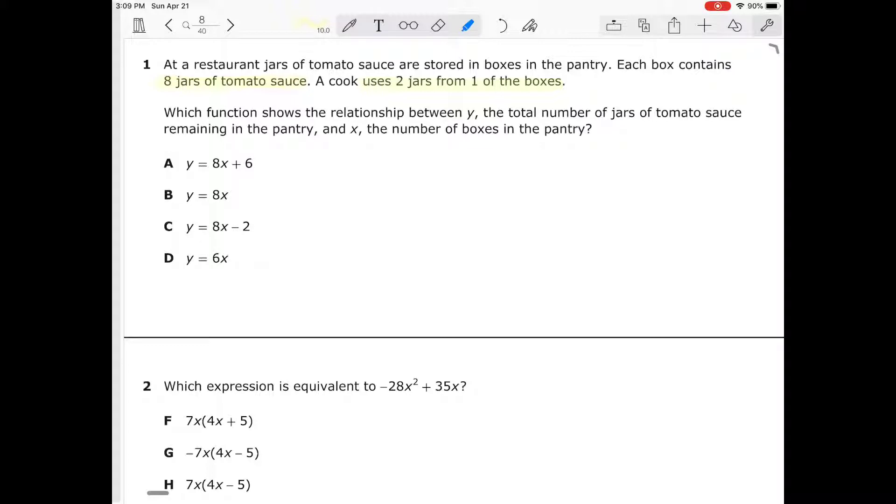Which function shows the relationship between y, the total number of jars of tomato sauce remaining in the pantry, and x, the number of boxes in the pantry? We have 8x and minus two because he used two jars. The only equation that fits that question is answer choice C.